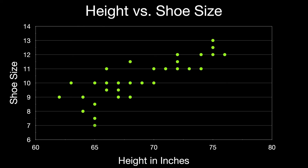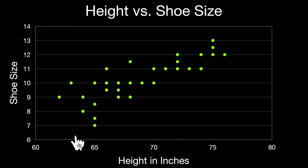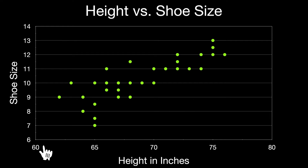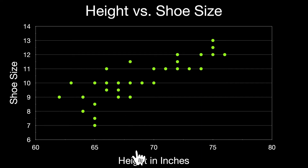Now let's look at a scatter plot. A scatter plot compares two variables — here we have height in inches and shoe size. Height is a variable and shoe size is a variable. As height goes up on the x-axis, the y-values (shoe sizes) go up as well. This helps us see a type of relationship or trend between these two variables. In this case, as height goes up, shoe size goes up, which is an indicator of a positive relationship or positive trend. So a scatter plot compares two variables — in this case, height in inches versus shoe size.